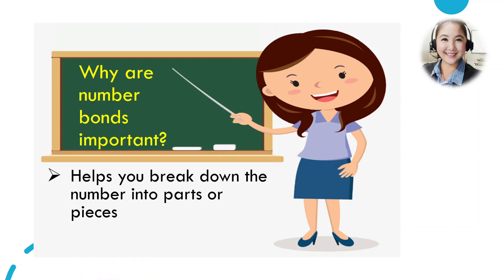Okay, number bonds are important because it helps you break down the number into parts or pieces, just like what we did. Ten is the total. It can be broken down into two parts. Eight and two. It can be six and four. It can be five and five.